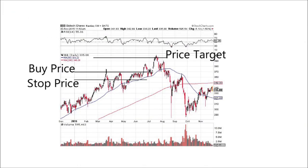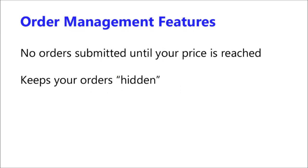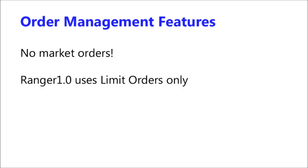For example, if your trading rules give you a setup on the biotech index, you can enter those values along with trade setups on up to 50 other stocks. The system will look for a breakout above your buy price for all setups and manage every trade that occurs, even while you're away from the computer. No orders are submitted until your price is reached, keeping your orders hidden — so instead of sending a stop limit order through your broker, Ranger 1.0 holds the order until your stop price is reached, giving you a slight advantage over market makers.